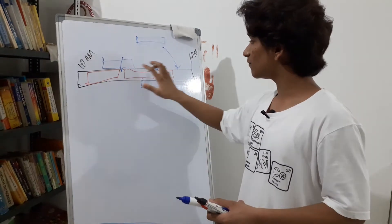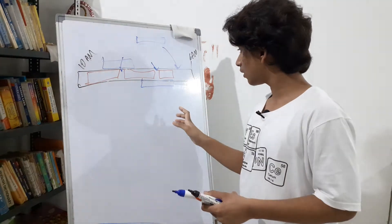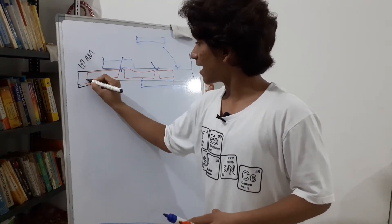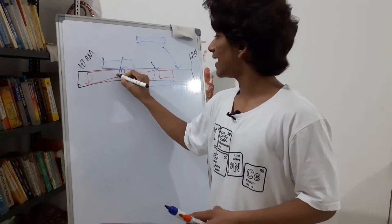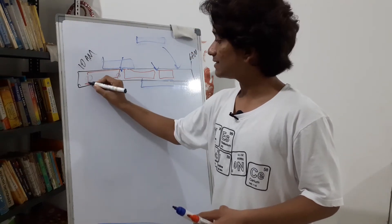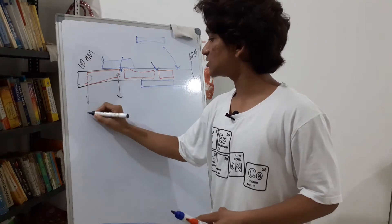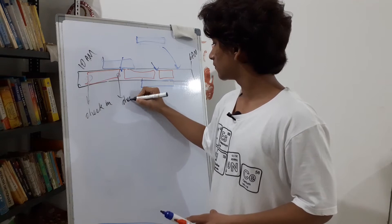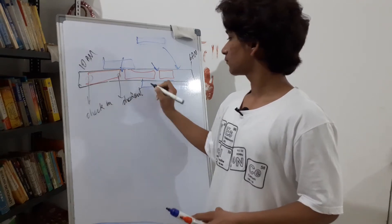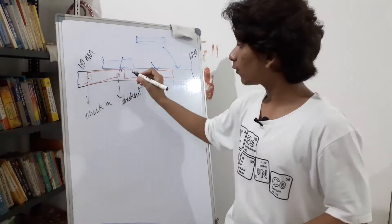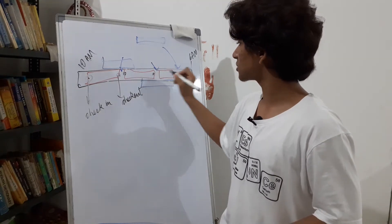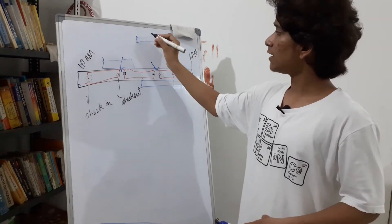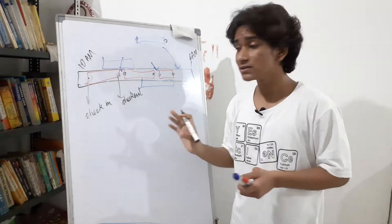To make sure new bookings don't overlap with existing ones, we need to understand that every booking has a beginning time and an ending time. In a hotel room example, that's a check-in and a check-out. Each existing booking on the timeline has its own check-in and check-out.